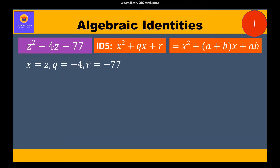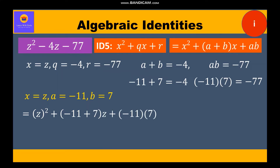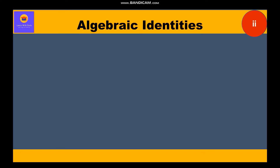We need two numbers a and b whose sum is -4 and product is -77. We can say -11 + 7 = -4 and -11 × 7 = -77. So x = z, a = -11, and b = 7. Substituting these values into identity 5, we get z² + (-11 + 7)z + (-11)(7), giving the factors as (z - 11)(z + 7).